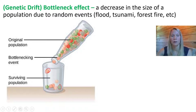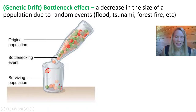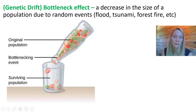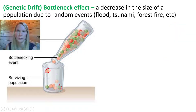By random chance, the red marble is eliminated from the population, so in future generations we only see the green and orange marble — only those particular genetic traits. This is not due to the biological fitness of the organism; it is simply due to random chance.